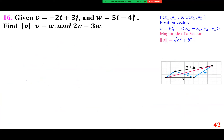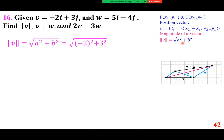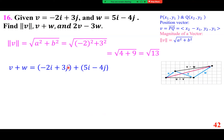Given two vectors, find the magnitude of the first: 4 plus 9 equals root 13. To add them, just add the components: negative 2i and 5i add to 3i, and the j components add to negative j.